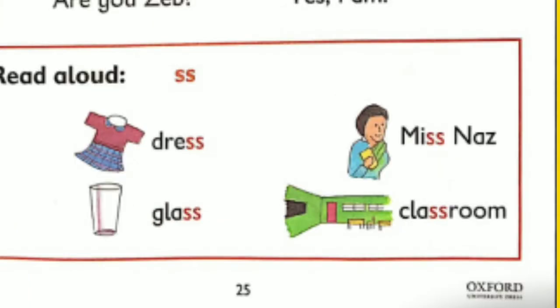Read aloud: SS — dress, glass, Miss Nash, classroom.